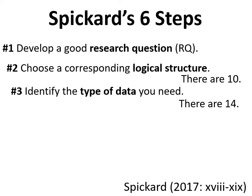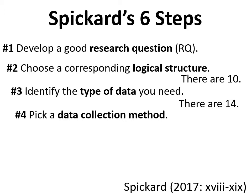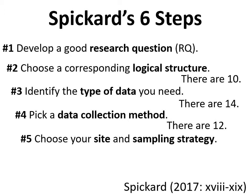According to Spickard, he identifies 14 types of data. Once you've identified the type or types of data you need, you work on a data collection method — how to get your hands on that data. He identifies 12 data collection techniques or methods, covered in chapters four and five. Last week we talked about choosing a site and sampling strategy, where he does not have a ready-made list. This week we get to talk about his last step: picking a data analysis method, which we'll discuss for much of the rest of the semester.